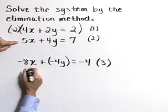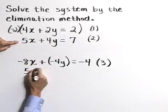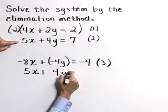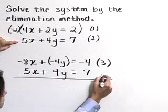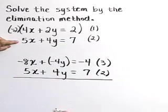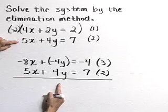Now we want to add that to our previous equation 2, which was 5x plus 4y is equal to 7. Now if we add, our y variable is going to cancel out.